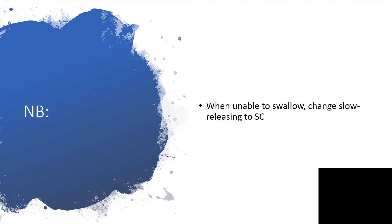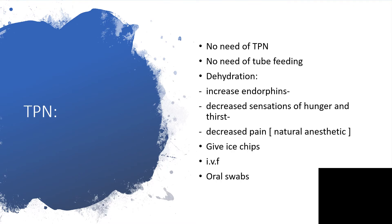When the patient is unable to swallow, change your slow-release medications — opiates or whatever — to subcutaneous route. Total parenteral nutrition is not necessary. There is no need for tube feeding; we don't need to call a surgeon. If there is dehydration, the dehydration will actually increase endorphins, which will decrease sensation of hunger and thirst, and decrease pain, providing a natural anesthetic effect. We give ice chips, heavy fluid, or oral swabs.